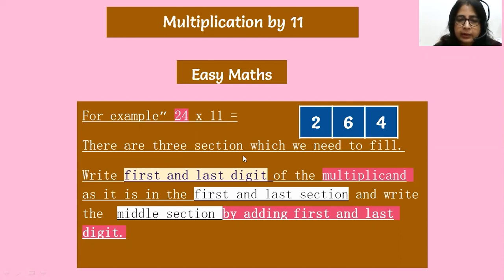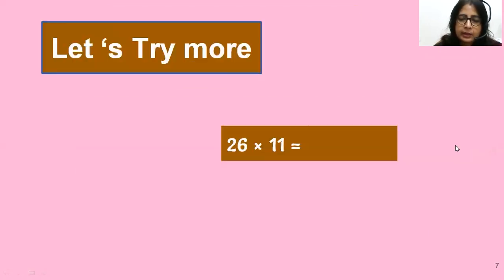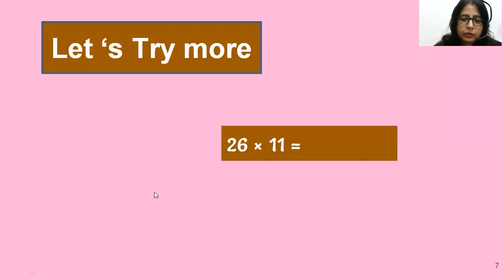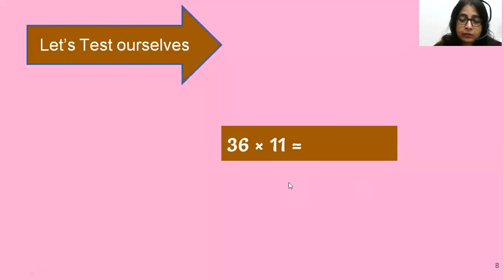Step by step: 24 into 11. There are three sections to fill — one, two, three. The first is two, last is four, and the middle is two plus four, which is six. So the answer is 2, 6, 4. Now let's try 26 into 11 easily without scratching. First is two, give the space, last is six, then two plus six is eight — so 2, 8, 6. I think even class one students can do these things. In conventional math you have to carry forward with many steps and get confused — but in Vedic math you will never be confused, you will enjoy it.